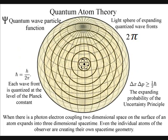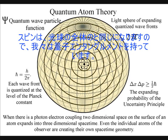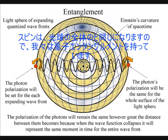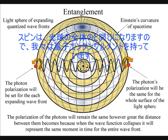The polarization of the light will be the same for the entire surface of the light sphere, creating quantum entanglement and the symmetry and geometry of spacetime.